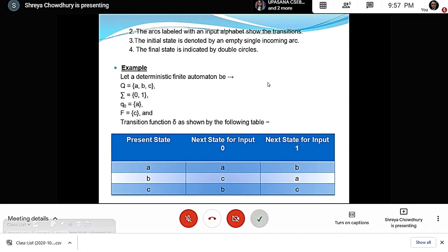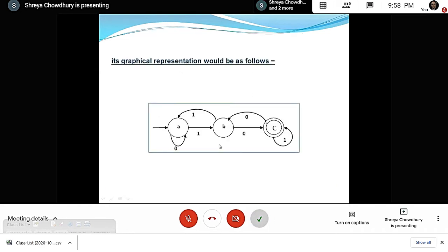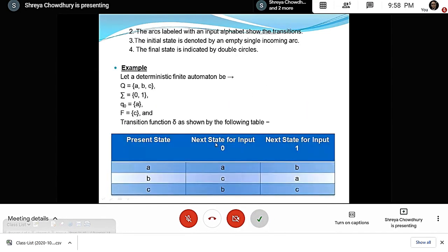Now an example of DFA will be explained. Let Q = {A, B, C}, Σ = {0, 1}, q₀ = A, and the final state F = {C}. The transition function is shown in the following table with present state and next states for inputs 0 and 1.